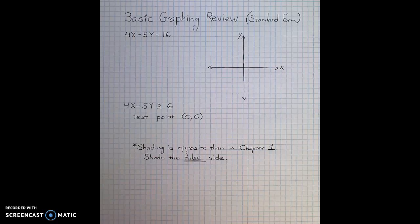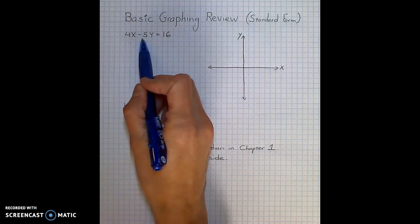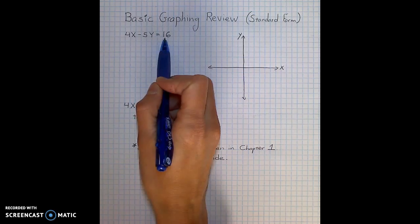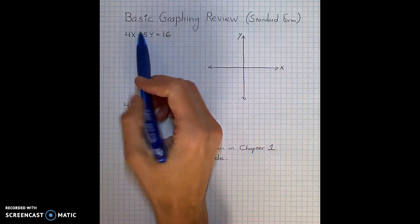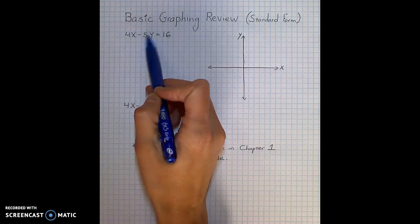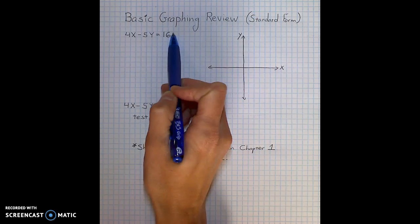Basic graphing review focusing on standard form. The equation I will graph is 4x minus 5y equals 16. This equation is in standard form because the x term and y term are both on the left hand side with a constant on the right.